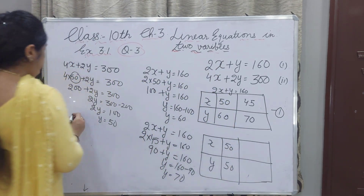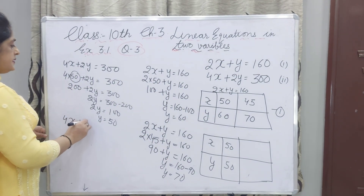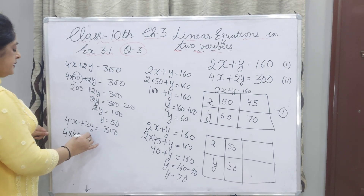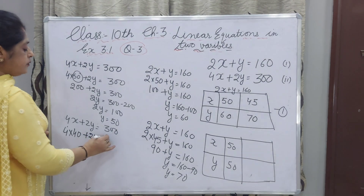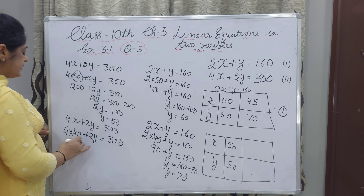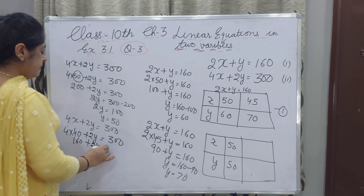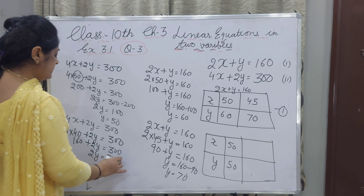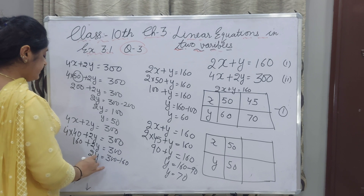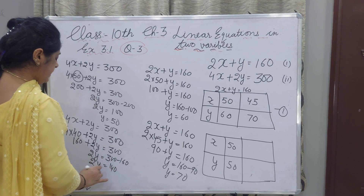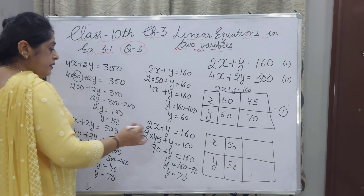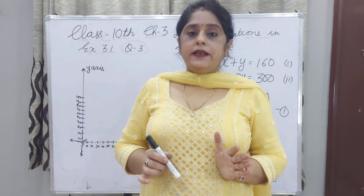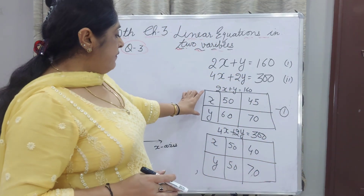One more value: 4X plus 2Y equals 300. 4 multiplied by 40 plus 2Y equals 300, so 160 plus 2Y equals 300, giving 2Y equals 140 and Y equals 70. If X is 40, I am getting Y as 70. Now we have made the table and we have the X and Y values.